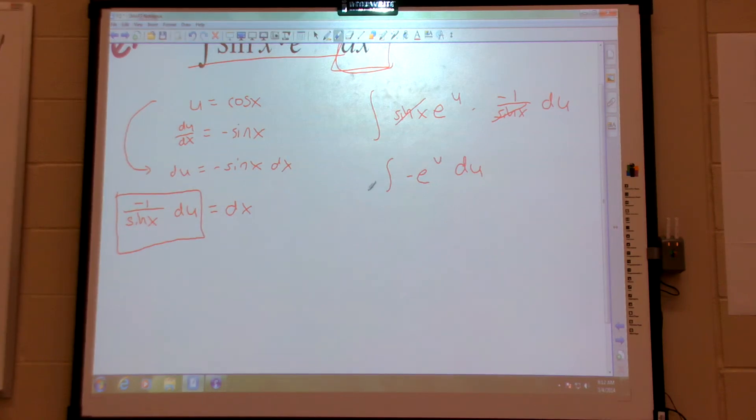So, let's do that. So, the anti-derivative of negative e to the u is? Negative e to the u. Negative e to the u, plus c. Last thing, I need to plug u back in. So, I get negative e, u is cosine, plus c.